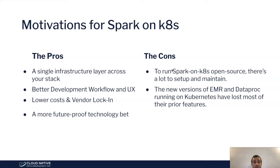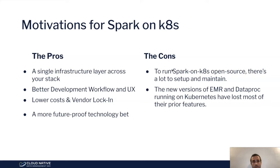To recap the motivations for running Spark on Kubernetes: a single infrastructure layer across your stack, better development workflow with Docker images, better UX, lower costs, and no vendor lock-in. It's also the technology everyone is building upon, making it a more future-proof bet. The main con is that running Spark on Kubernetes open source requires a lot to set up and maintain. And managed products like Amazon EMR or Google Dataproc have early Kubernetes versions that have lost many prior features because a lot had to be rebuilt — which is why we started Data Mechanics and are building a next-generation Spark on Kubernetes platform.